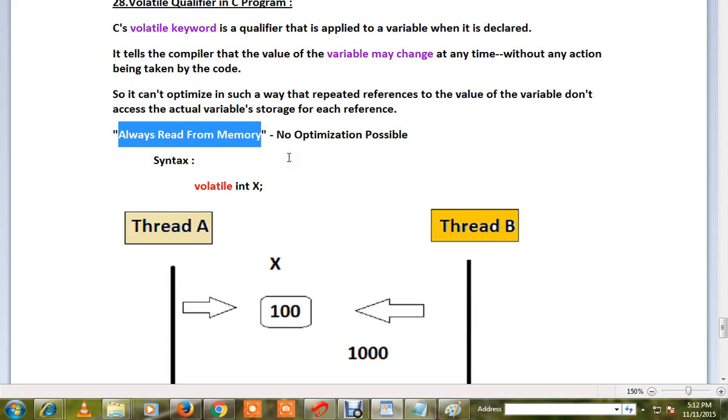When I say volatile, always read from memory. There is no optimization the compiler can give for this variable. The compiler will treat this variable in a special way. It will always read the value for this variable from the memory.